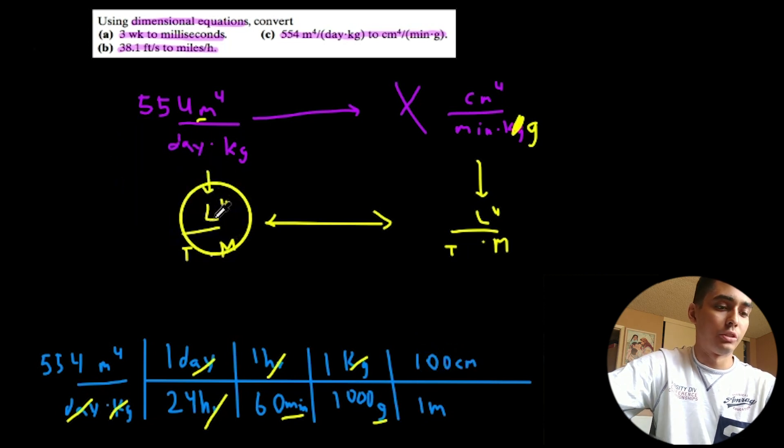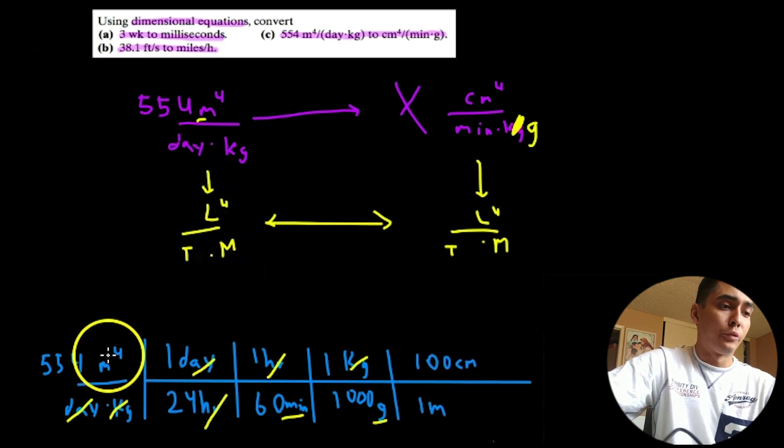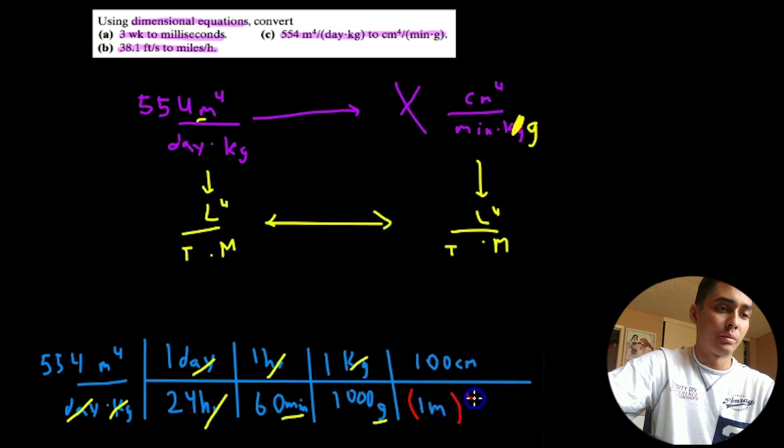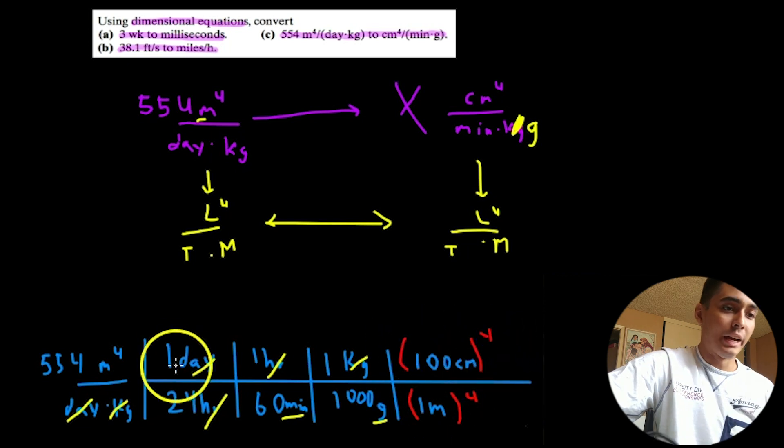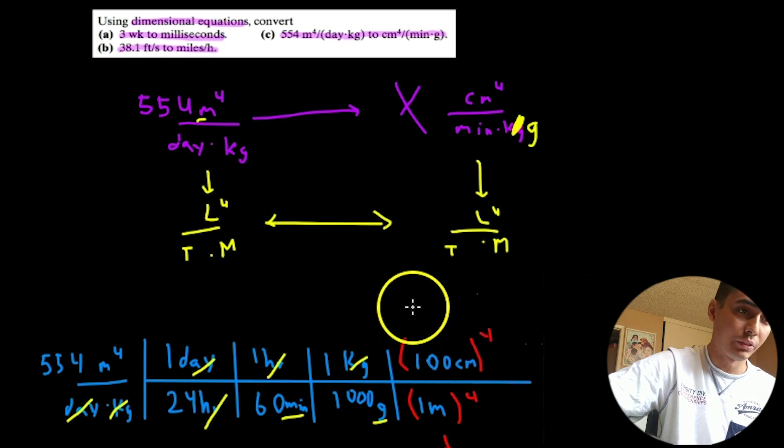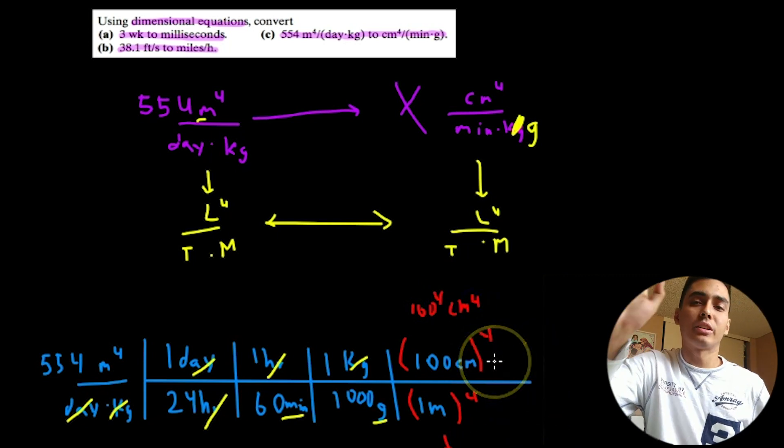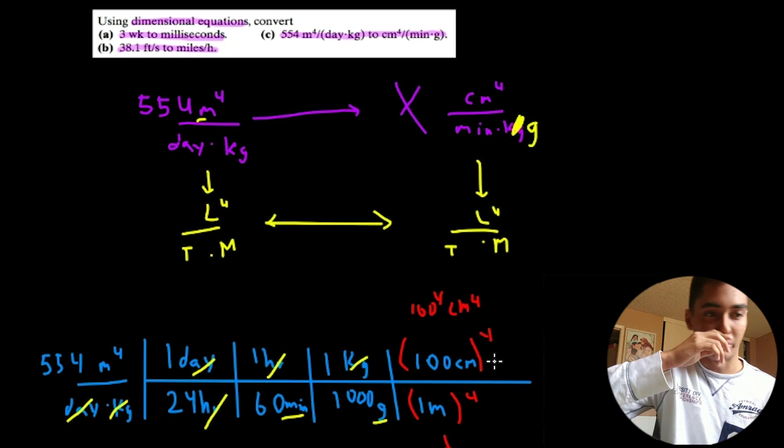So, the very, very tricky thing to do is, if we want to convert this to the fourth, we need to multiply the entire conversion factor, both the top and the bottom, by the fourth power. Now, this really becomes one to the fourth, which, of course, is still one meters to the fourth power. And this becomes 100 to the four centimeters to the fourth power. Very, very important. This is just because of math. You just have to get used to it and be very, very careful.